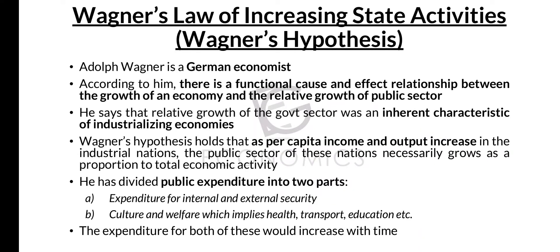So let's look at what Wagner's Hypothesis is. Adolf Wagner is a German economist. What he put forward is that there is a functional cause-and-effect relationship between the growth of an economy and the relative growth of the public sector. A cause-and-effect relationship means a factor or thing that causes or affects change in another thing.